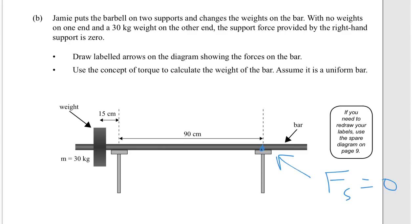Draw labelled arrows on the diagram showing the forces on the bar. Use the concept of torque to calculate the weight of the bar, assuming it is a uniform bar. We've got two masses here: the force of the mass, the weight on the end, and the force of the bar.